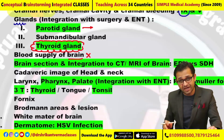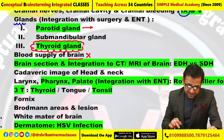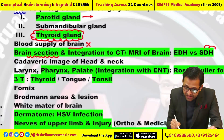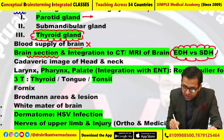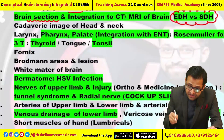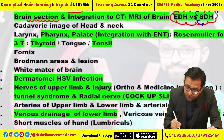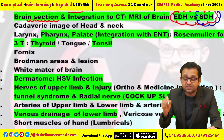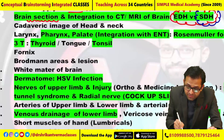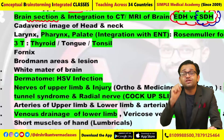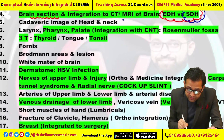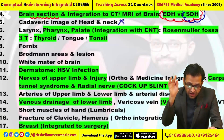Brain section — definitely this question is surely asked. Extradural hemorrhage and subdural hemorrhage: such CT/MRI images were given, and students are informing that subdural hemorrhage was the answer. Also one indirect question from subarachnoid hemorrhage integrated with medicine had been asked. The cadaveric image of the head and neck question had not been asked.